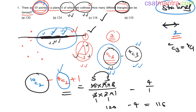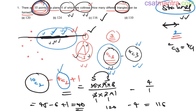10C2 is 45, minus 4C2 which is 6, plus 1 — that gives 40. So we can have 40 different straight lines using these 10 points. The method is: find the total considering all points non-collinear, then subtract the lines or triangles formed by the collinear points. For straight lines, remember to add plus 1 because there is one straight line joining all those collinear points.